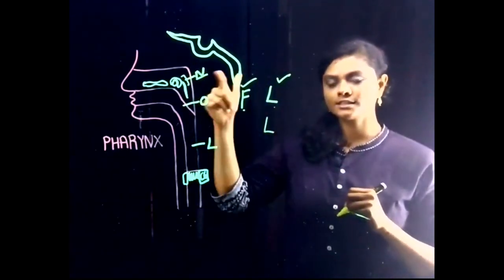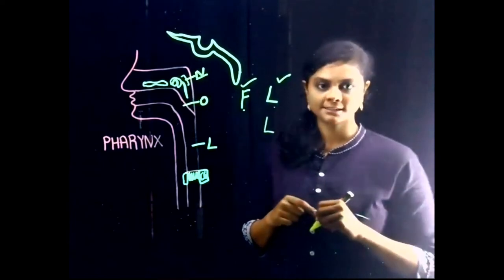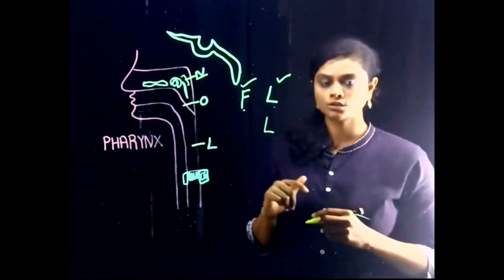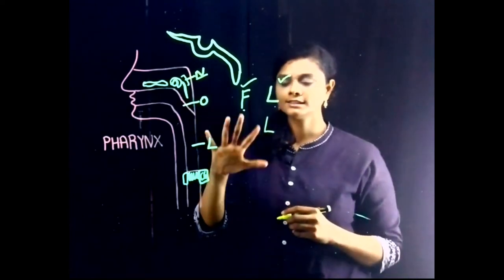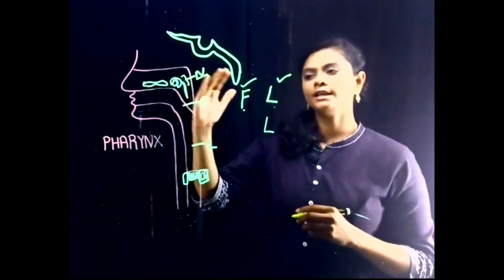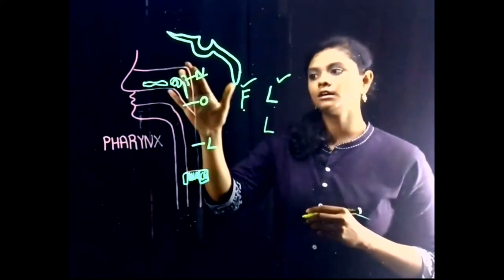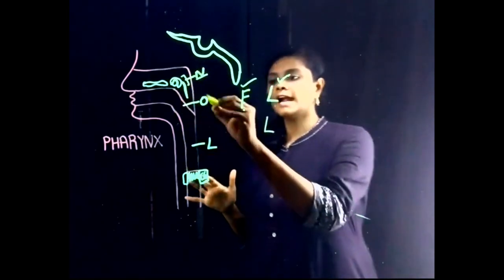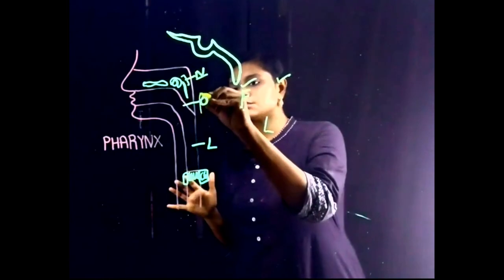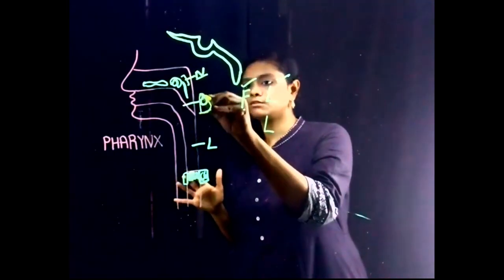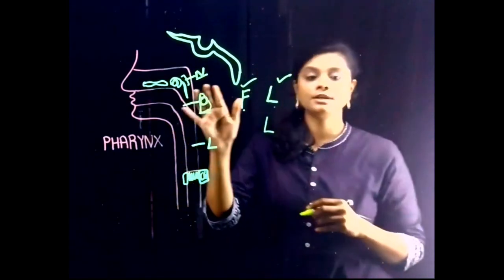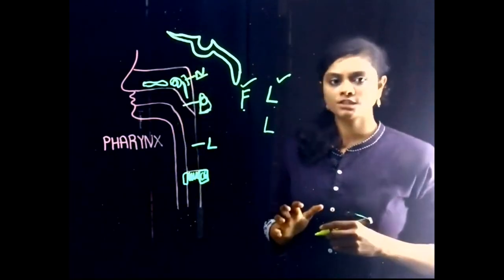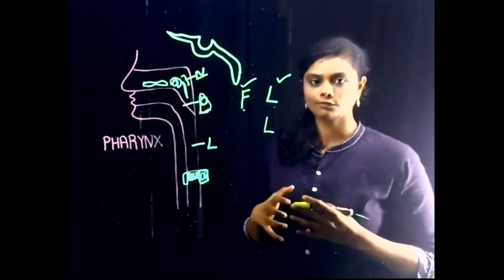There is a muscle on the lateral wall — the levator veli palatini. Coming to the roof, it is formed by the body of the sphenoid, the basi-occiput, and we can also find the atlas — the first cervical vertebra — which is present here. These all form the posterior wall or roof of the nasopharynx.